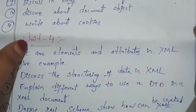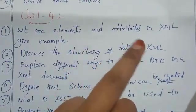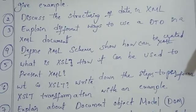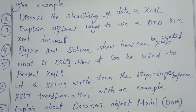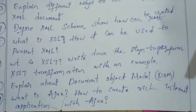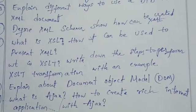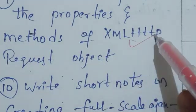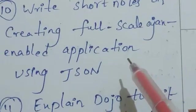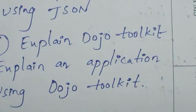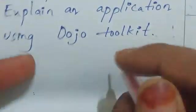Unit 4 is about XML. First question is about elements and attributes in XML. Second question is about structuring of data in XML. Third question is about ways to use DTD in XML document. Fourth one is about XML schema. Fifth one is about XSL. Sixth one is about XSLT. Seventh question is about document object model. Eighth question is about Ajax. Ninth question is about list and explain the properties and methods of XML HTTP request object. Tenth one is about creating full-scale Ajax.